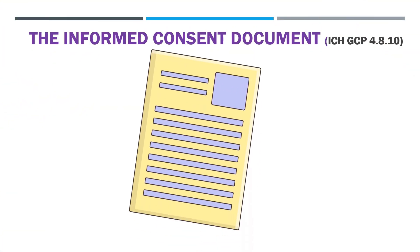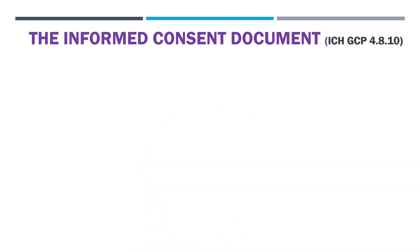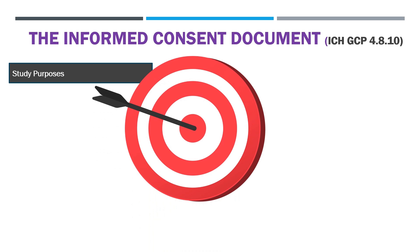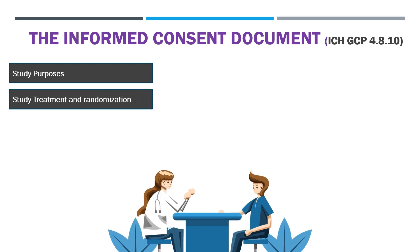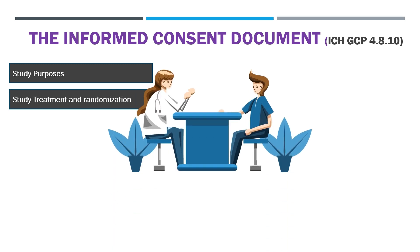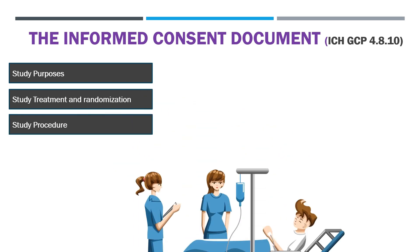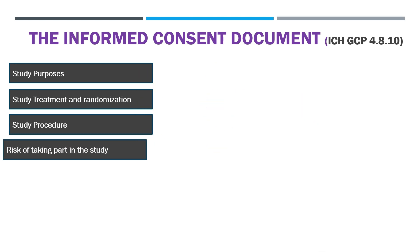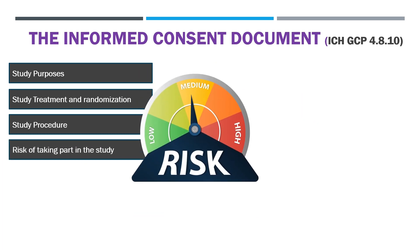As per ICH GCP, these points should be included in the informed consent form. 1. Study purpose — the document must state that the trial involves research and state the purpose of the trial. 2. Study treatment and randomization — the document must state the trial treatment and probability for randomization. 3. Study procedure — procedures to be followed, including all invasive procedures, participants' responsibilities, and duration of the trial. 4. Risk of taking part in the study — reasonably foreseeable risks or inconveniences to the participant.